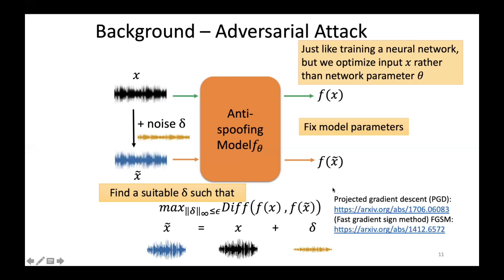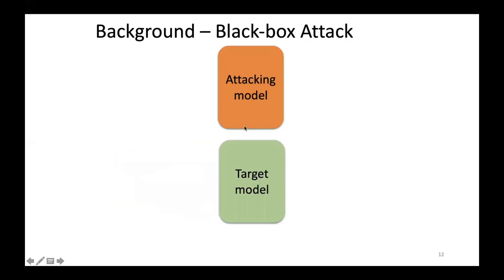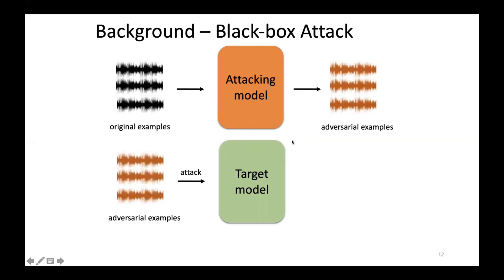Different searching strategies for delta will result in different attack methods. In this work, we adopted two gradient-based methods: the projected gradient descent method and the fast gradient sign method. Then, I want to talk about what is a black-box attack. Here we have two models: the attacking model and the target model. The target model is the model we want to attack; the attacking model is the model we use to generate adversarial examples. In the black-box attack scenario, the attackers don't know the internals of the target model, so they use another attacking model to generate adversarial examples and use these to attack the target model.